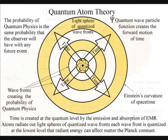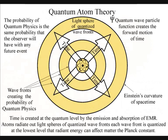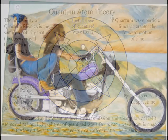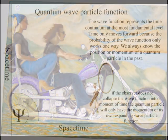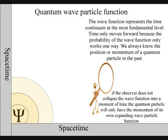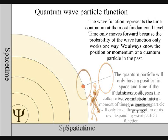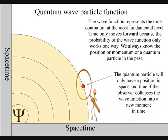We always know the position or momentum of a quantum particle in the past. The uncertainty principle of quantum mechanics is the same uncertainty that the observer will have with any future event. The quantum particle will only have a position in space and time if the observer collapses the wave function into a new moment in time.